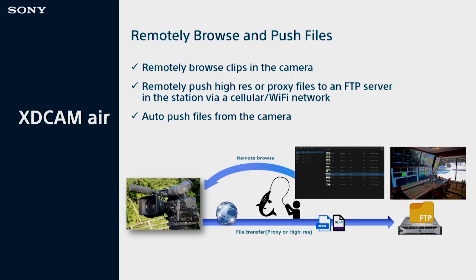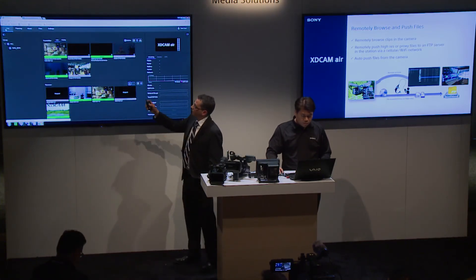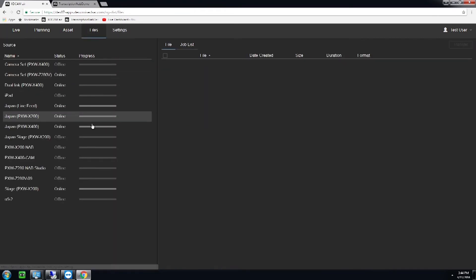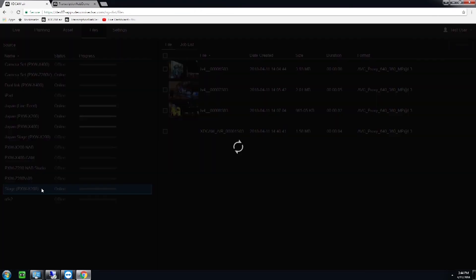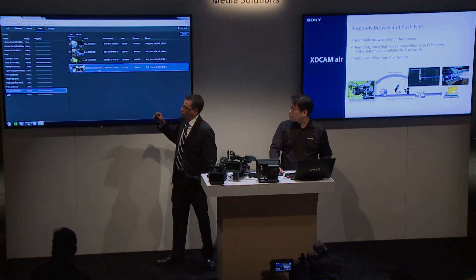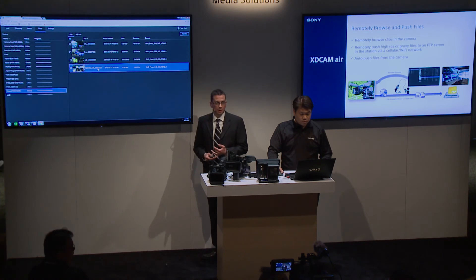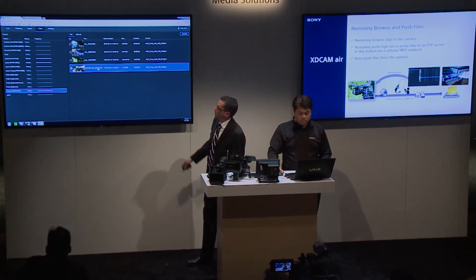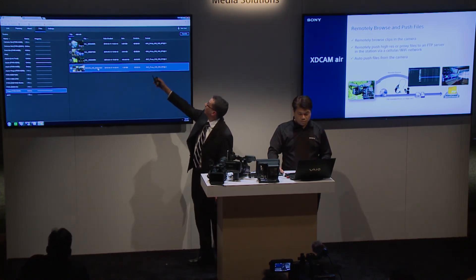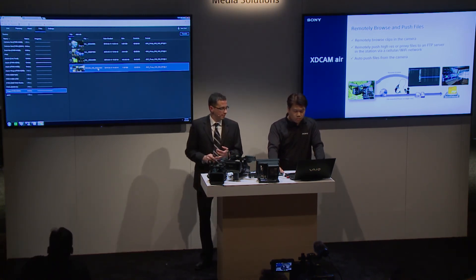If you don't want to set your camera up to do auto proxy pushes, you can go into the Files tab and actually reach into the media of the camera itself. That camera could be anywhere in the world — whether in Japan or right here. We're now looking at the media on this camera, our X200, and we can cherry-pick what we want to send back to either our FTP site at our facility or back to XDCAM Air. We click on a clip, do a transfer, and it transfers to our assets page or back to our FTP site.